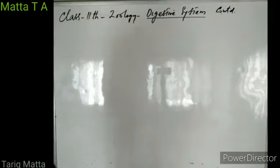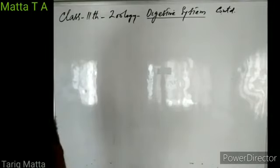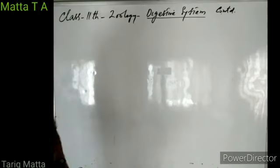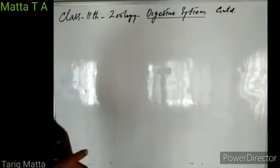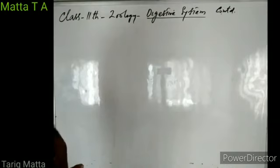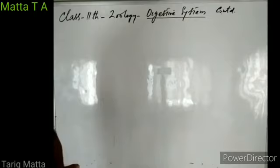Let's start today's topic. We are discussing the digestive system. We have discussed mouth, esophagus, and stomach. Then we were discussing the small intestine. In the last lecture, I told you that the small intestine is divided into three parts: duodenum, jejunum, and ileum.